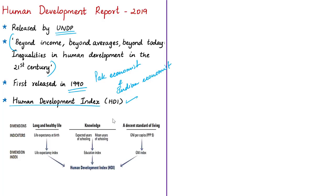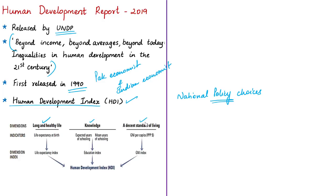The HDI was created to emphasize that people and their capabilities should be the ultimate criteria for assessing a country's development, not economic growth alone. It is a summary measure of average achievement in three key dimensions: a long and healthy life, being knowledgeable, and having a decent standard of living. The HDI is the geometric mean of normalized indices for each of these three dimensions.